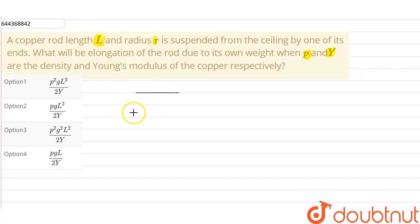In the question we have been given a copper rod of length L and radius r suspended from the ceiling by one of its ends. Let us suppose this is the copper rod having length L and radius r which is suspended from the ceiling by one of its ends. The density is ρ and Young's modulus is Y of the rod.